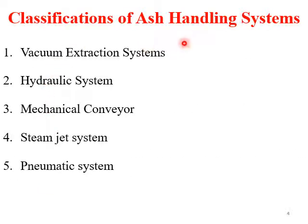This is the classification of the ash handling system. The ash handling system can use a vacuum system, hydraulic system, mechanical system, or steam jet system. Ash is collected from several points: the bottom of the furnace, economizer, ESP, and electrostatic precipitator.